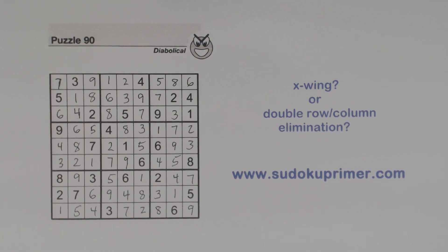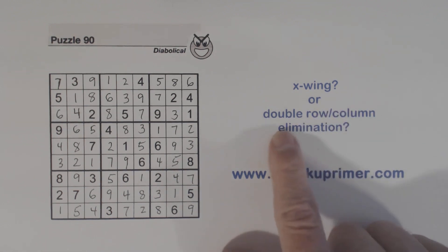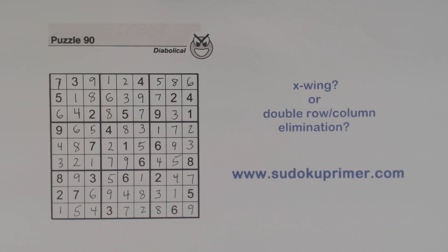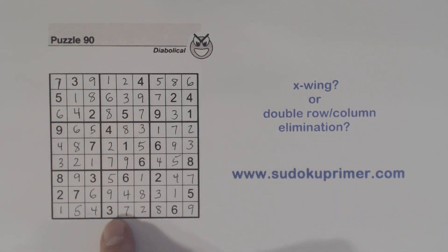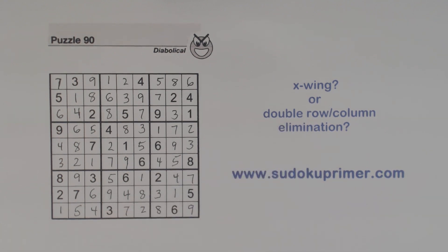I hope this video has helped you understand the difference between X-wings and double row and column elimination. They're related but they're different — they have different purposes. But sometimes, as in our second example, you could use either one: either double row and column elimination or X-wings. So I hope that helped. Thank you for watching and I'll see you on the next video.